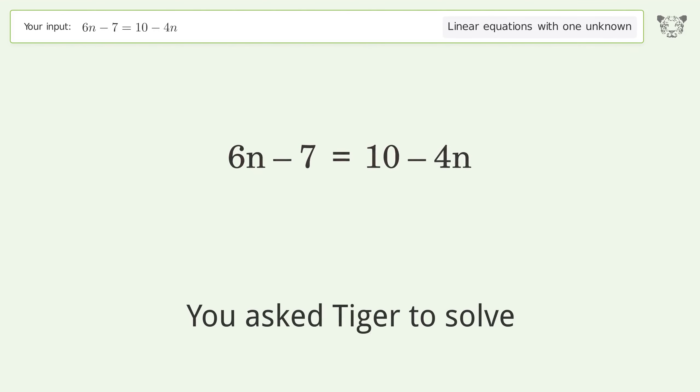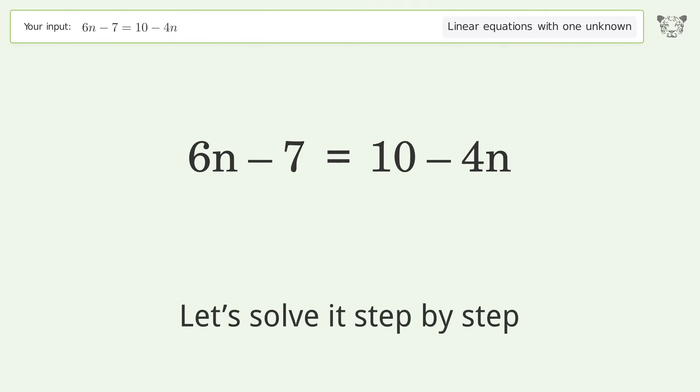You asked Tiger to solve. This deals with linear equations with one unknown. The final result is n equals 17 over 10. Let's solve it step by step.